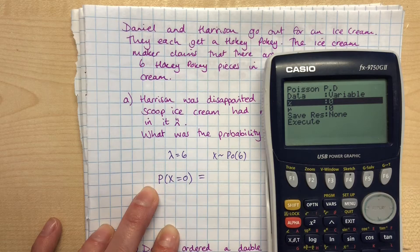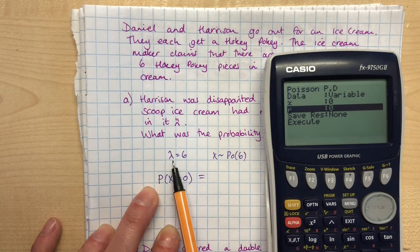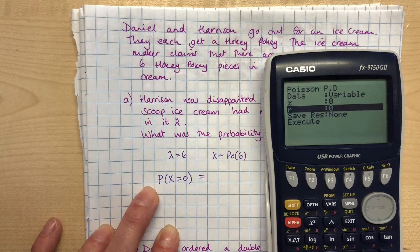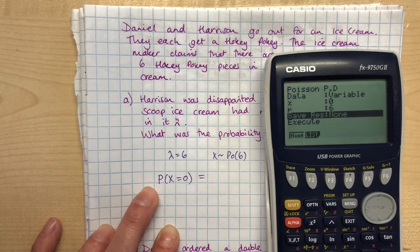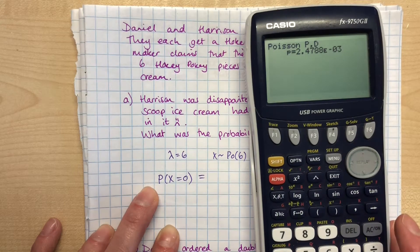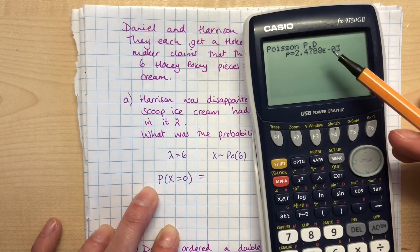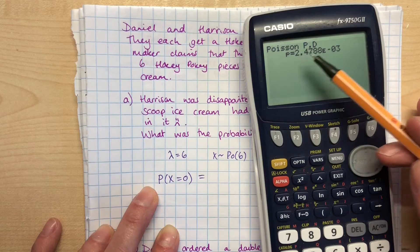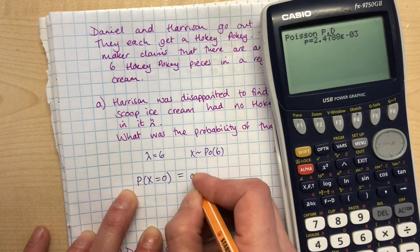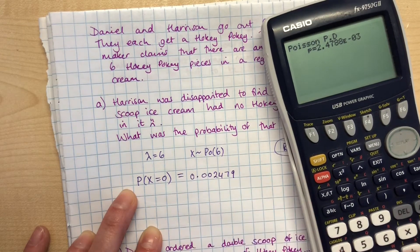This is saying that the data is in a list on your calculator, which is not - we haven't input any lists for this information, so we need to change that from list to variable, so we press F2. Okay, now our X value is when X is zero, and mu on your calculator is our lambda from the question. Just with Poisson we tend to call it lambda - it means the same thing, it's the average of six, so we enter that.